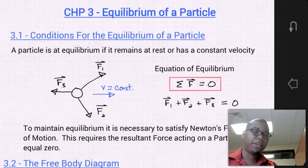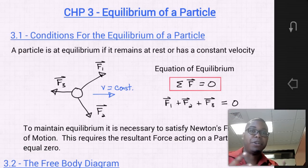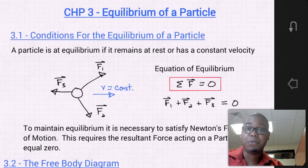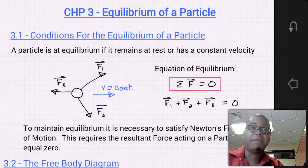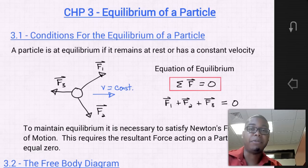A particle is said to be at equilibrium if it remains at rest or if it has a constant applied velocity. This means an object sitting on a desk, or an object in space which is given a velocity and is allowed to maintain that constant velocity without any friction or interaction with its environment. In general, with statics in this class, we're going to be dealing with problems where objects are at rest — meaning static objects.